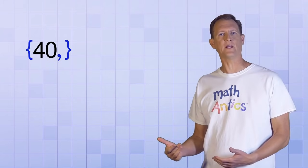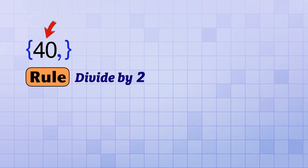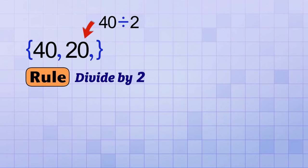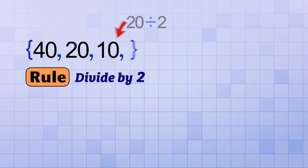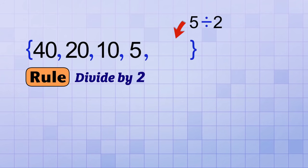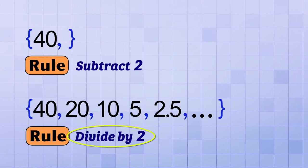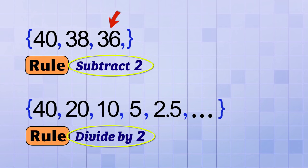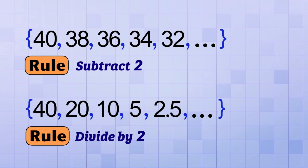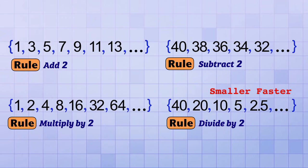It works similarly with division. Starting with 40 and dividing by 2 each time: 40, 20, 10, 5, 2.5, and we could keep dividing by 2 forever to get smaller and smaller fractions. Compare that to starting with 40 and subtracting 2 each time: 40, 38, 36, 34, 32 and so on. Notice how the division-based sequence gets smaller much faster than the subtraction-based sequence, just as multiplication-based sequences got bigger much faster than addition-based ones.